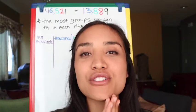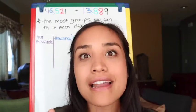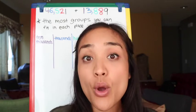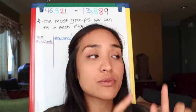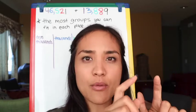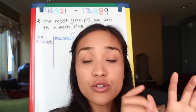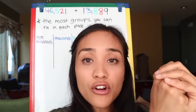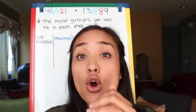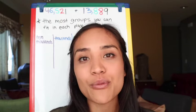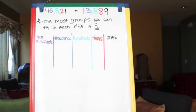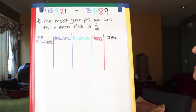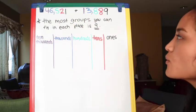Hello and welcome to the next video on adding multi-digit numbers with regrouping. Just like the last video, we're going to count up our groups, and once we get to a group of ten, we're going to gather that group of ten, move it on over to the next place value, and turn it into one group. Let's get started — focusing on this number here: 46,521.